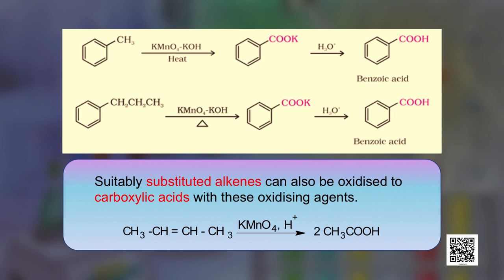Alkenes can also be converted to carboxylic acids — suitably substituted alkenes can be oxidized to carboxylic acids with these oxidizing agents, as seen in the example reaction shown here.